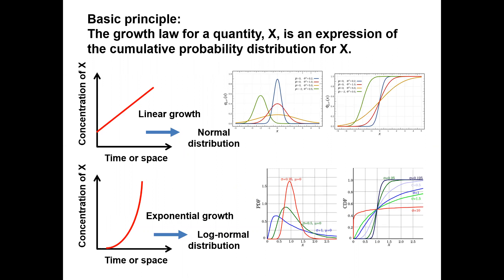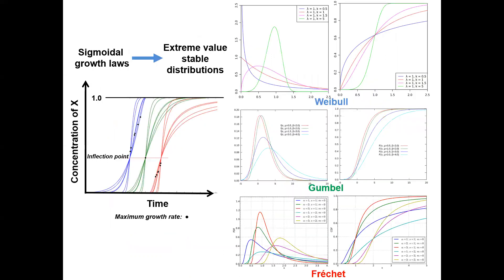The basic principle is that the growth law for a quantity x — which might be gold or muscovite — is an expression of the cumulative probability distribution for x. Linear growth results in a normal distribution, and exponential growth results in a log-normal distribution. Sigmoidal growth laws of various forms result in extreme value stable distributions, of which there are just three: the Weibull, the Gumbel, and the Fréchet. The Gumbel has a very thin tail on the right, the Weibull has a slightly thicker tail, and the Fréchet can have very thick tails.